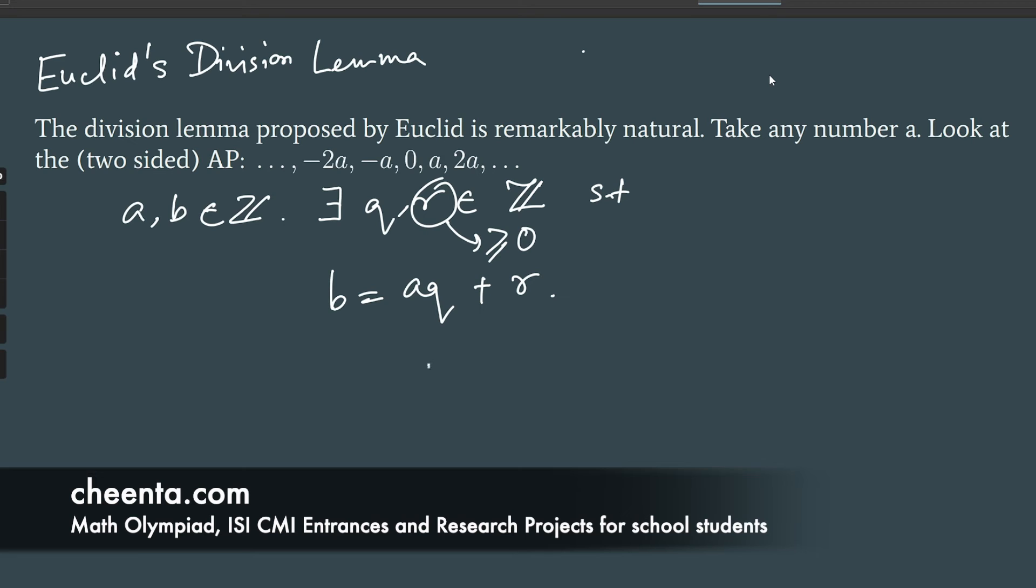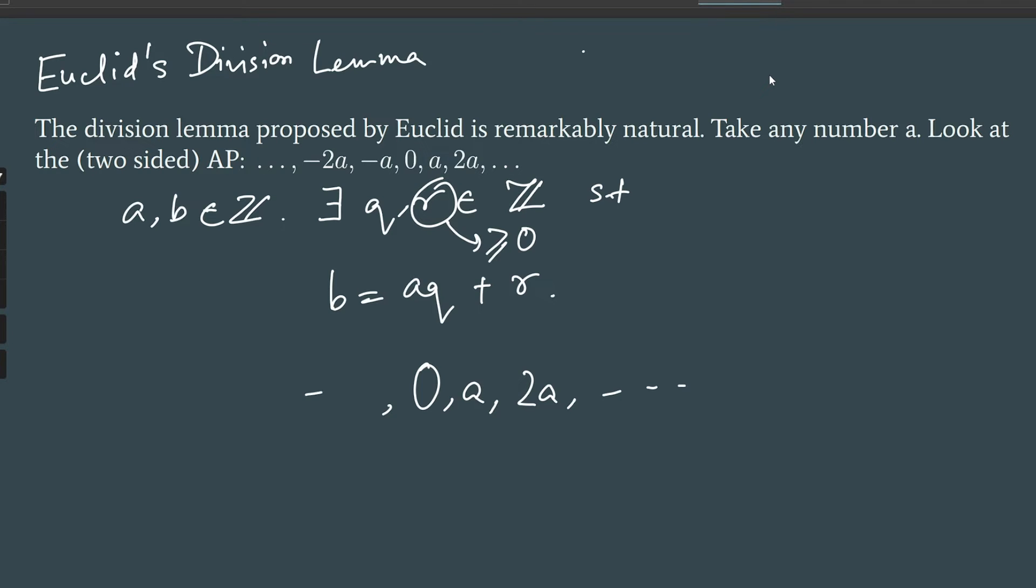Look at the AP: 0, and this is what we call a two-sided AP. It extends to infinity on both sides. Now, since it's a two-sided infinite AP, we can actually look at the integer number line. You look at 0, A, 2A, and so on. And this goes on for all the multiples of A, including the negative multiples. And what we want to do now is find B on this number line with respect to this AP. What does that mean?